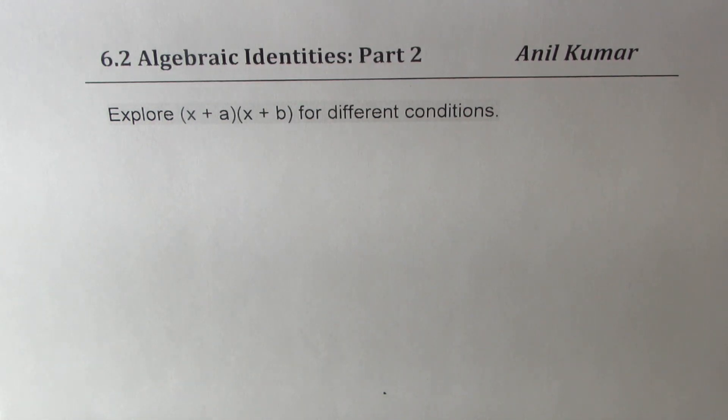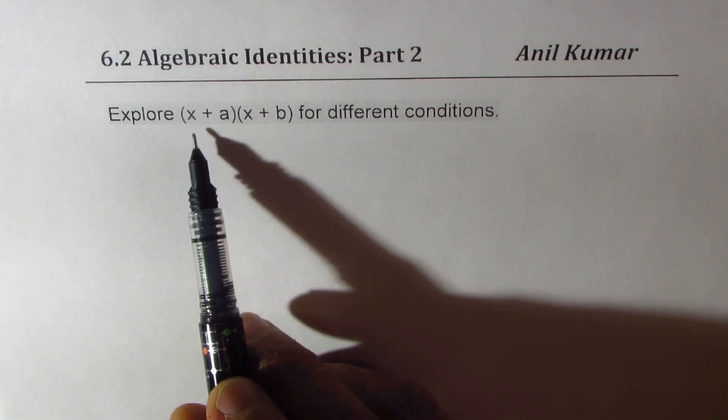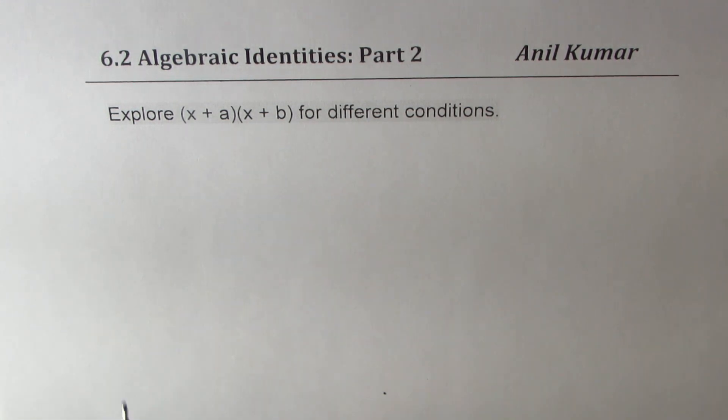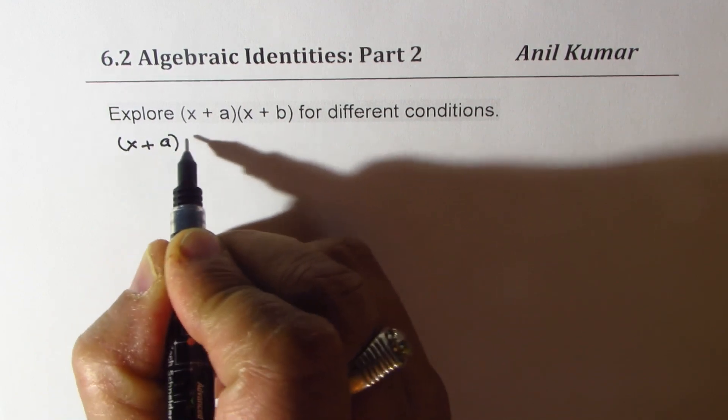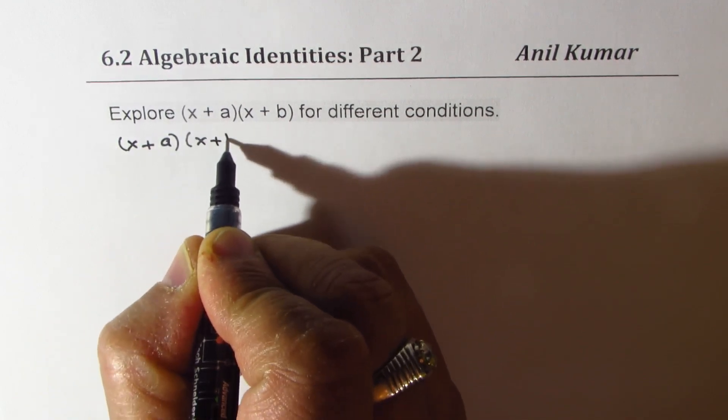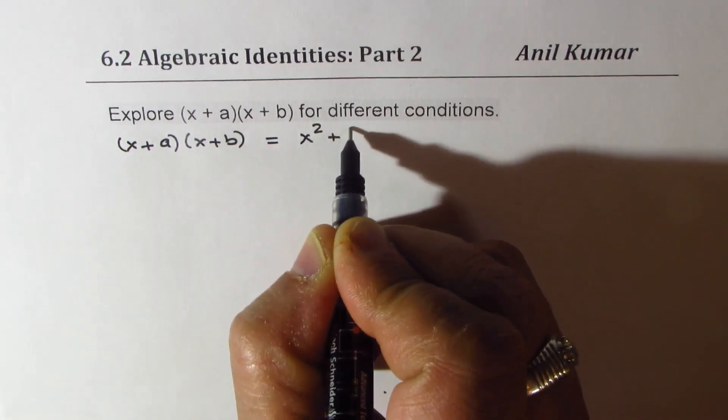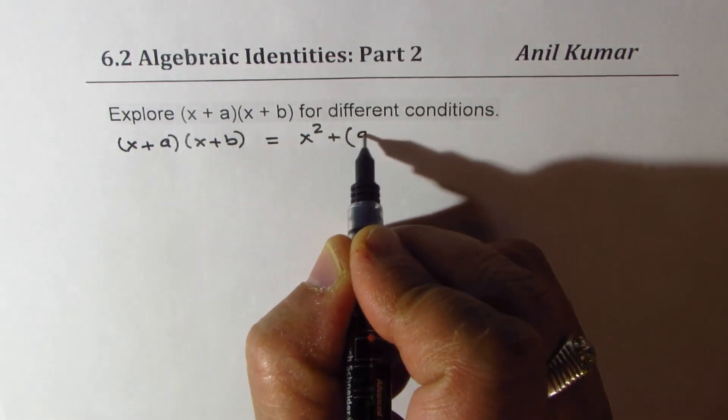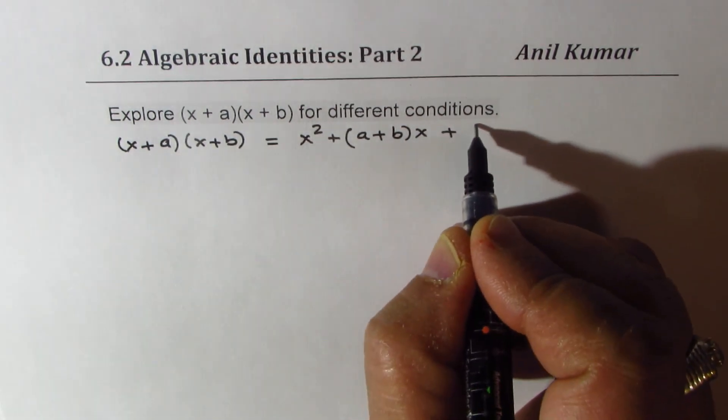I'm Anil Kumar. Welcome to my series on algebraic identities. Now in part 2, we are going to explore the product identity x plus a times x plus b. We learned that x plus a times x plus b is equal to x squared plus the sum of these two, that is a plus b times x, plus the product of a and b.